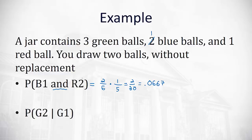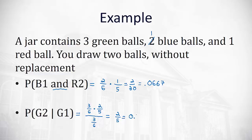What's the probability of green on the second draw given green on the first? Using the given formula: probability of both is 3 out of 6 times 2 out of 5 (since one green was removed), divided by the probability of the given information — green on the first draw — which is 3 out of 6. This gives two-fifths, or 0.4.